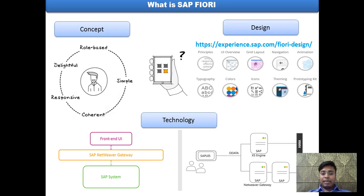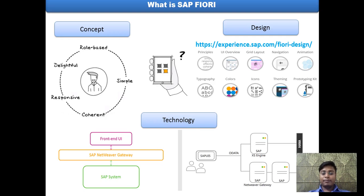In the concept dimension, the total Fiori concept is based on five basic things: it is role-based, it's simple, it's coherent, it's responsive, and it's delightful. We will go through each and every part of it in some of our later slides.